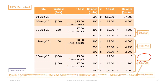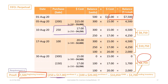We can now prove our ending inventory. Beginning with beginning inventory of $7,500, we add the first purchase of 250 units at $17 for $4,250, then the second purchase of 100 units at $20 for $2,000, and subtract the cost of goods sold of $10,050. This gives us ending inventory of $3,700, confirming we are correct.